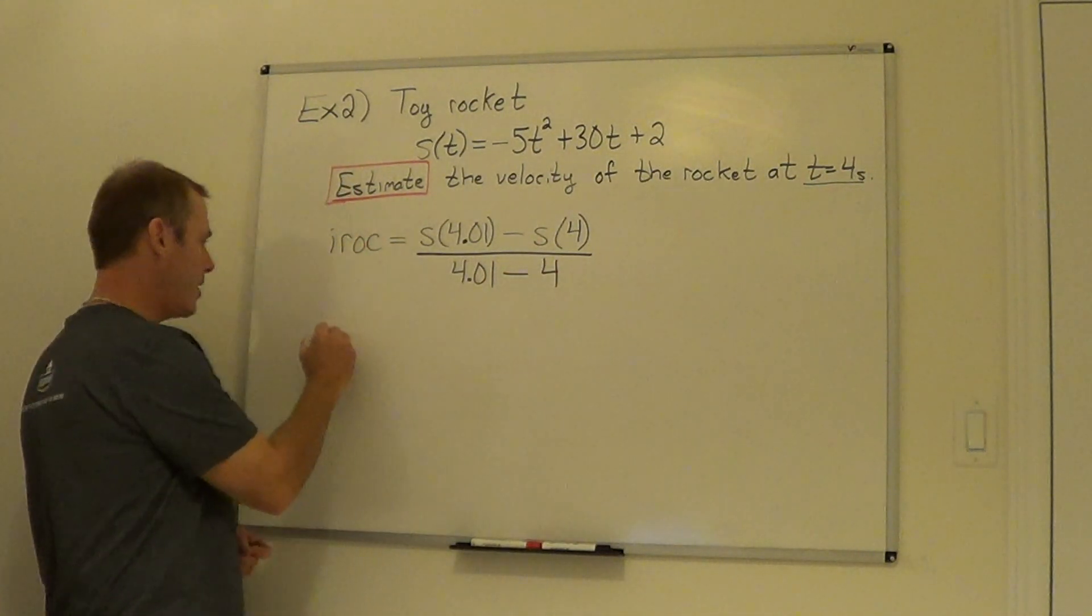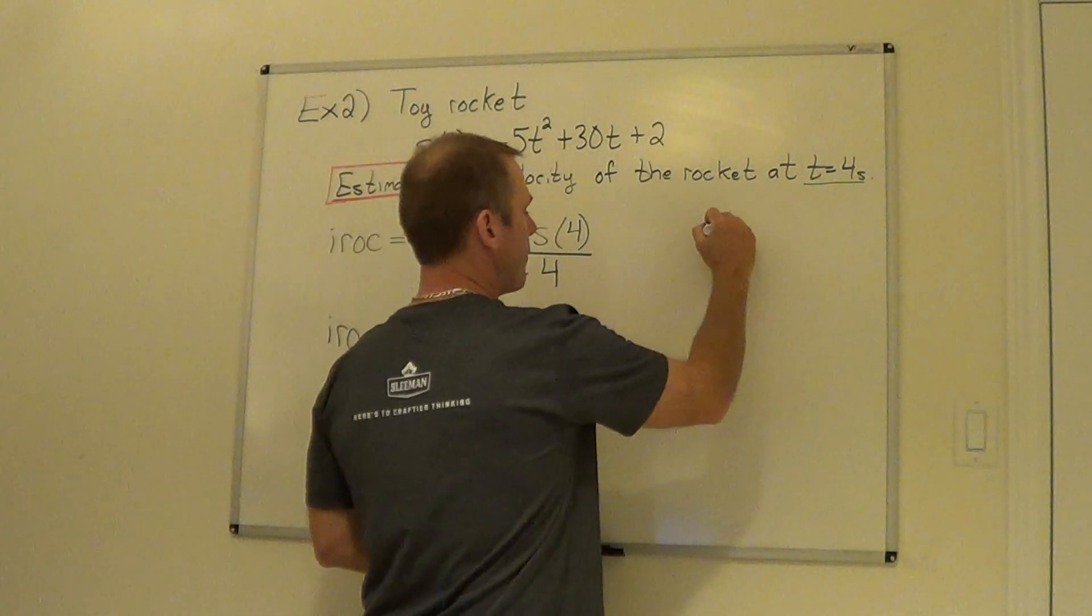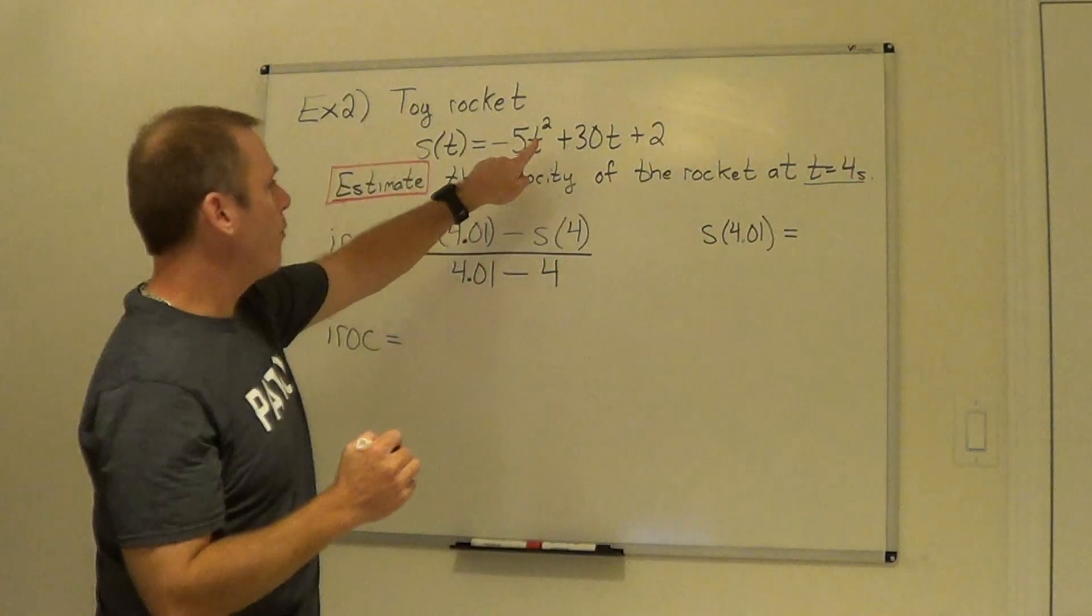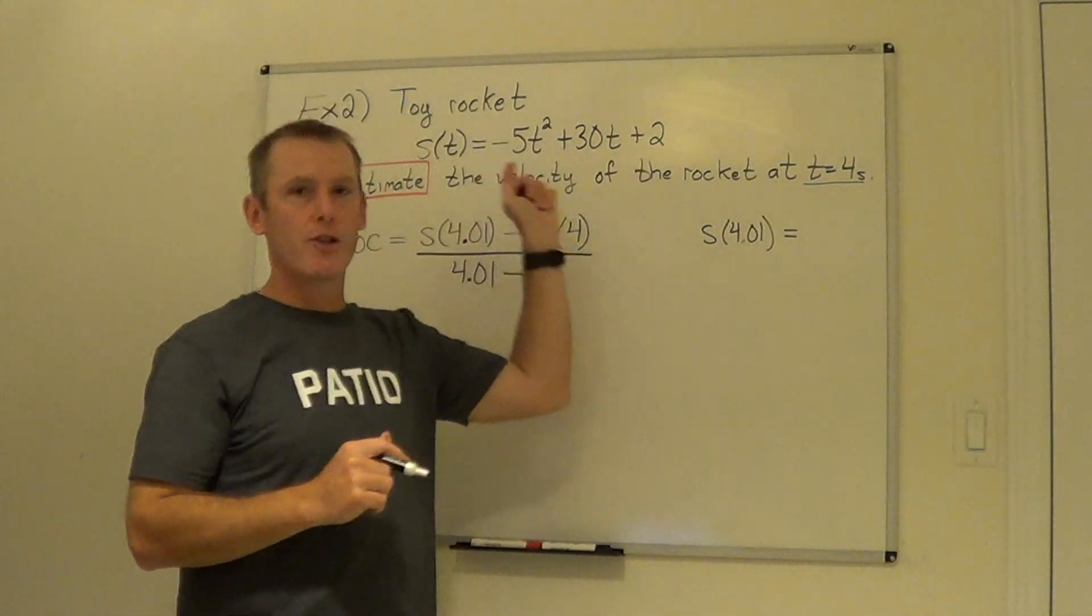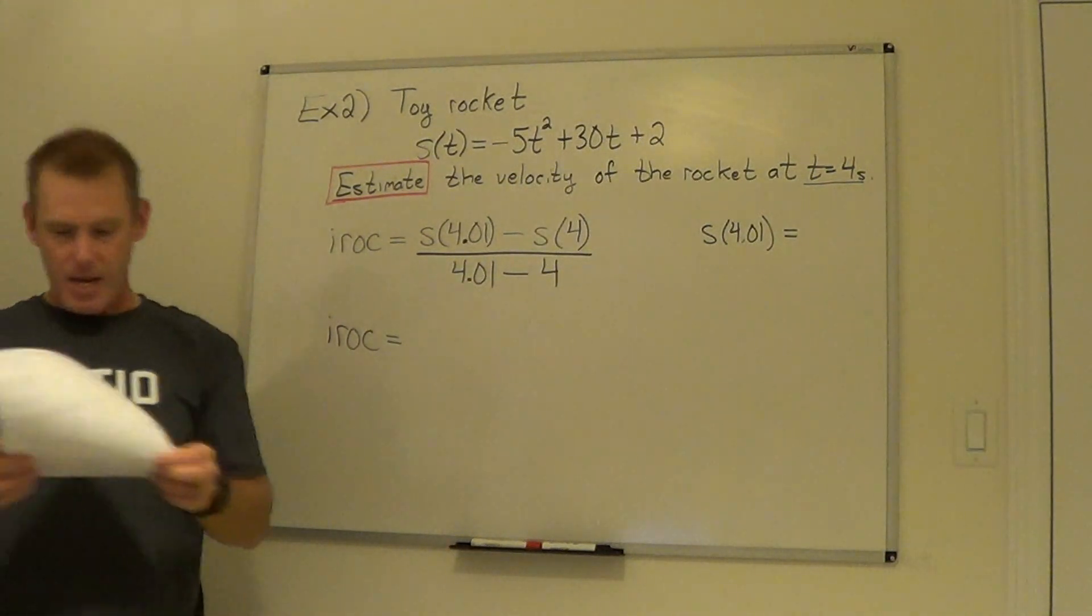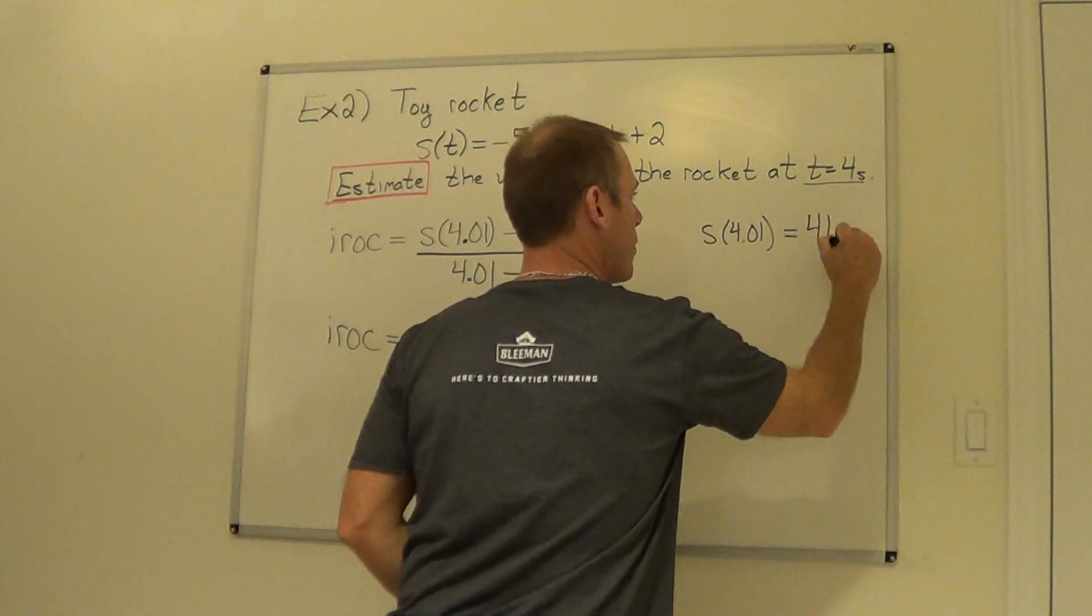Now to substitute in, I'm going to save a little time here. If I want s of 4.01, I would have to sub 4.01 into this equation, make a calculation, figure out what I get, and for me, I've already done that and I got 41.9.